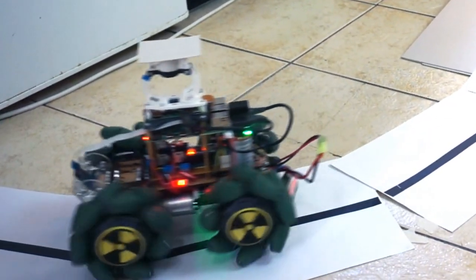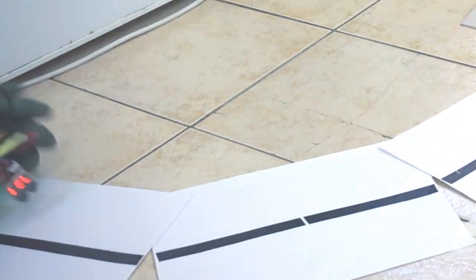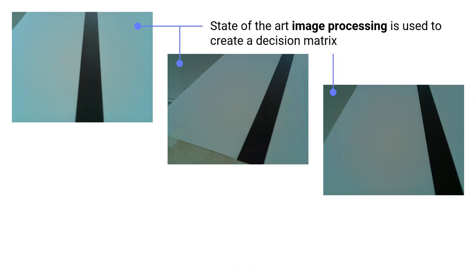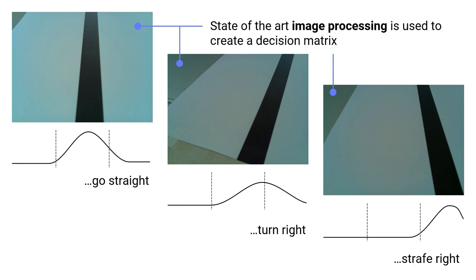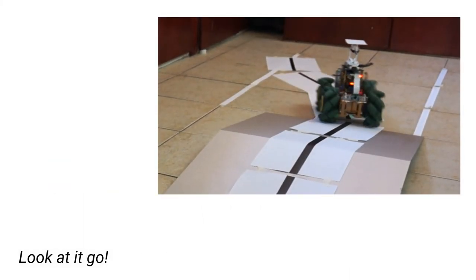Our road detection algorithm uses state-of-the-art image processing. Statistical moments analysis is applied to each frame to evaluate for the presence of a road marker. A decision is then made to continue on, turn, or strafe. This results in a fast algorithm that allows the 1B to move quick when called for.